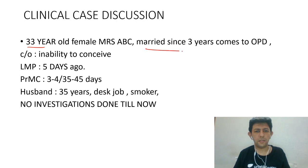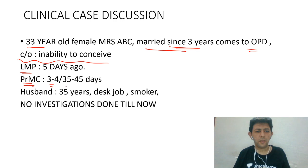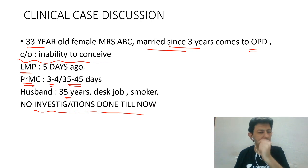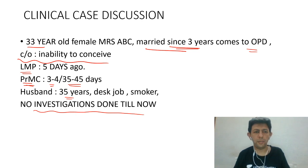A 33-year-old female, married for three years, comes to the OPD with complaints of inability to conceive. Last menstrual period was five days ago. Present menstrual cycle: bleeding for three to four days, with a cycle interval of 35 to 45 days — so the cycles are irregular. Husband is 35 years, has a desk job, smokes, and no investigations have been done till now.